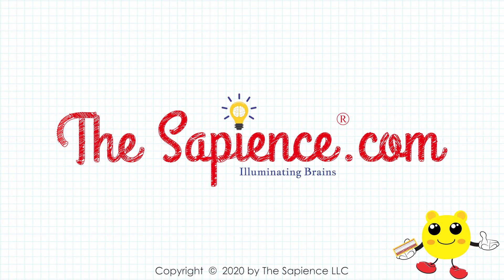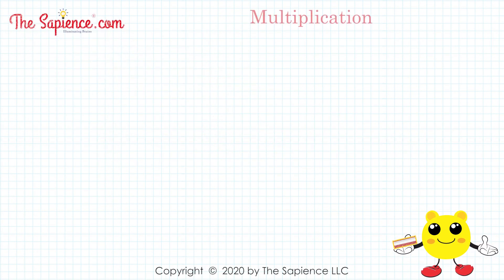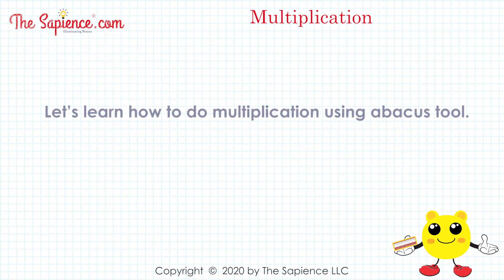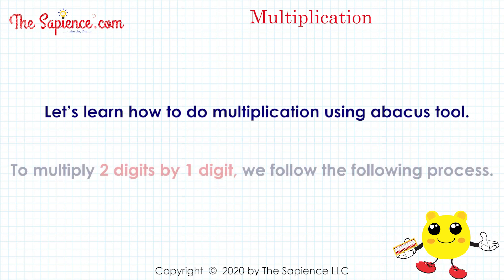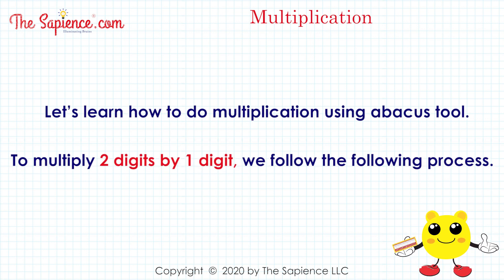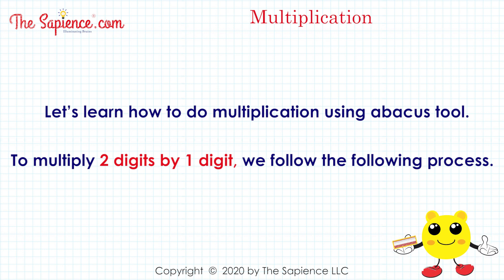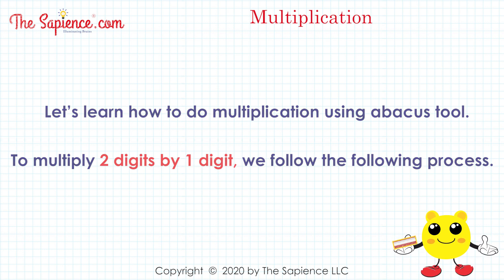Hi, welcome to thesapience.com. Let's learn how to do multiplication using the Abacus tool. To multiply two digits by one digit, we follow the following process.